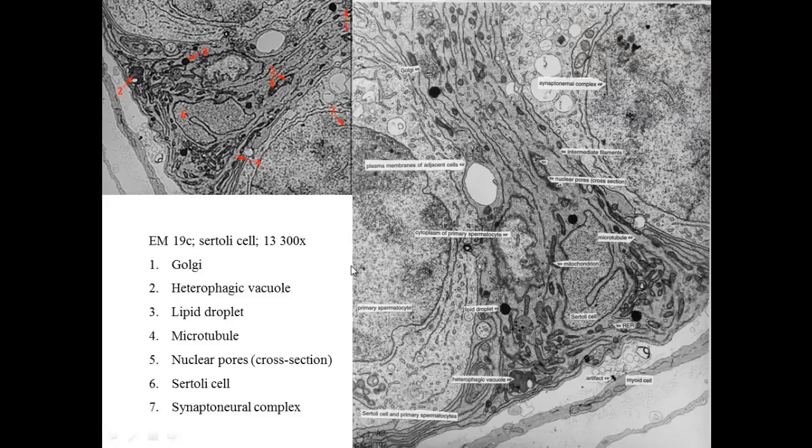Here we see electron micrograph of the Sertoli cell, which is a tall cell again, it's from the base all the way up to the lumen, we don't see the lumen up there. And we see two primary spermatocytes, this is one, the nucleus over here and the nucleus over there. And this one we can see the synaptonemal complex, which is where you have crossing over on the DNA during meiosis to occur.